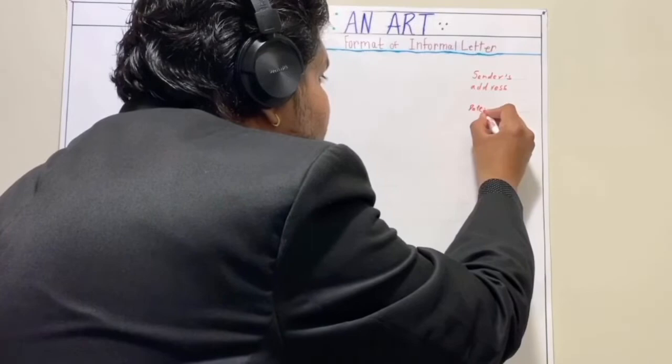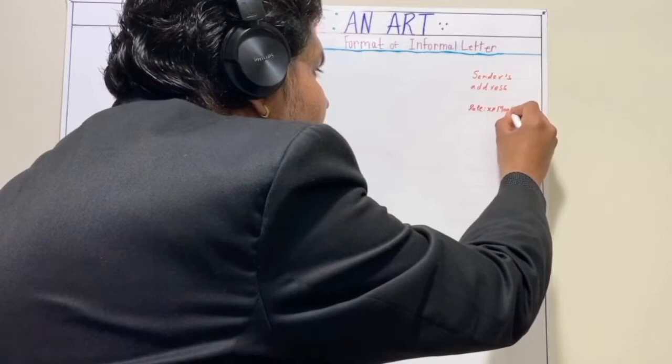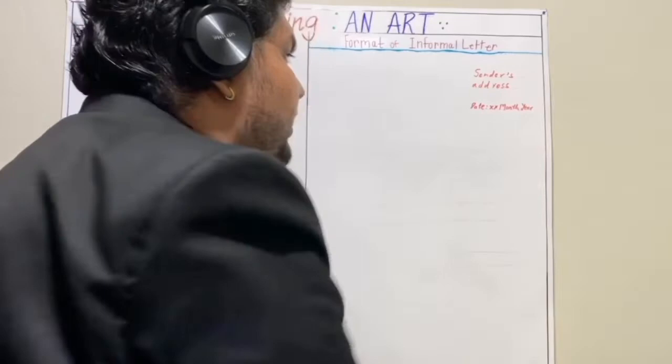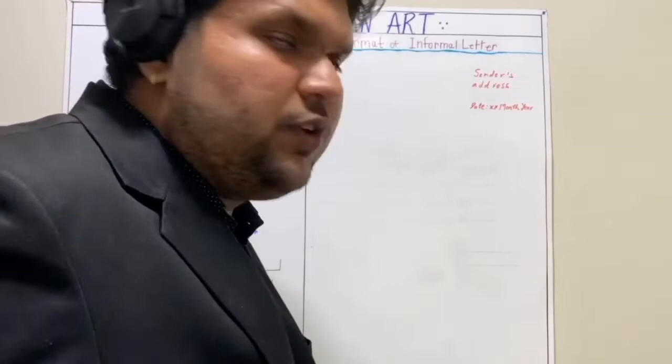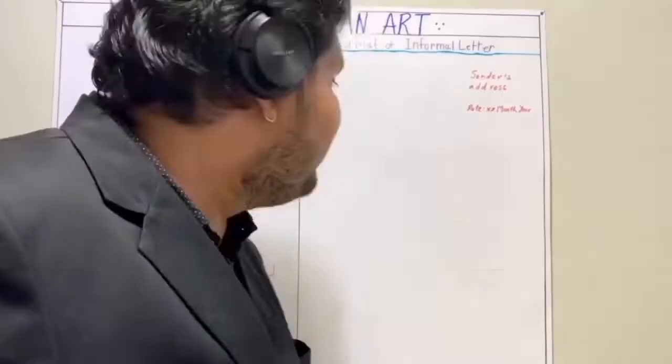After the sender's address we have the date. The date should be written as a numerical value for the day, then the month written in full spelling, and then the year in complete numbers — like 2020. For example, June is J-U-N-E, July is J-U-L-Y, and September is S-E-P-T-E-M-B-E-R — not B-A-R, guys. Make sure you know that.